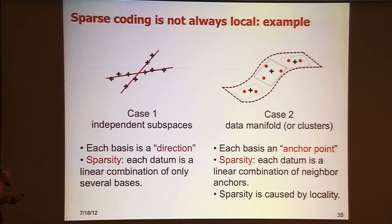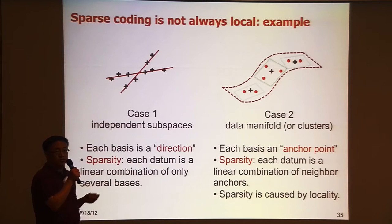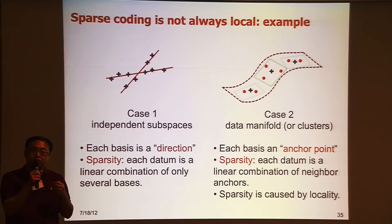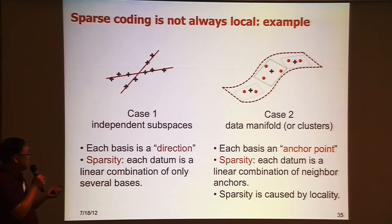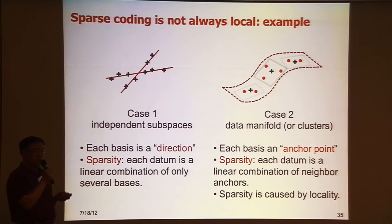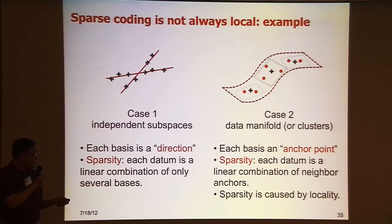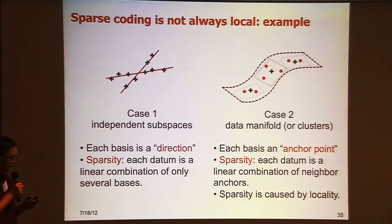In the other case, those red dots are the bases in your dictionary. To represent an input data point, you activate the neighboring bases in your dictionary — those bases that are similar to the test data point. In this case, each basis is like an anchor point, and sparsity means each data point is a linear combination of neighboring anchors. You only activate three bases; other bases are completely silent, not activated. So you get a sparse representation.